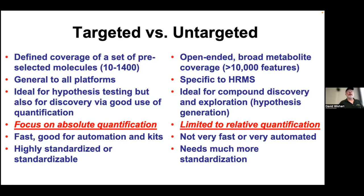With targeted versus untargeted: the targeted side has defined coverage—it's a pre-selected set. Targeted can measure as few as 10 metabolites up to 1,400 now, and it's generalizable to all major platforms. It was specifically developed for hypothesis testing, but many people now use targeted metabolomics for discovery—discovering biomarkers and biology—because most biomarkers are based on quantitative values and whether you're above or below a threshold. Targeted metabolomics focuses on absolute quantification: millimolar, micromolar, nanomolar values. It's fast, good for automation, good for kit systems, and increasingly standardizable. You can follow ISO guidelines.